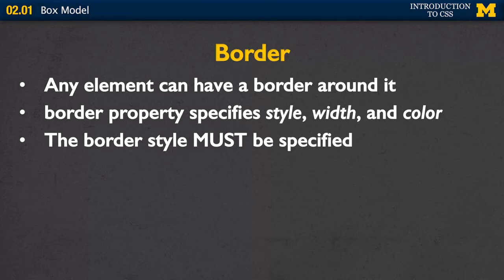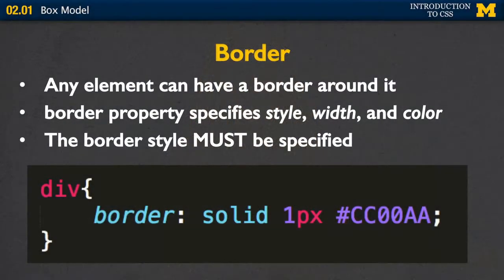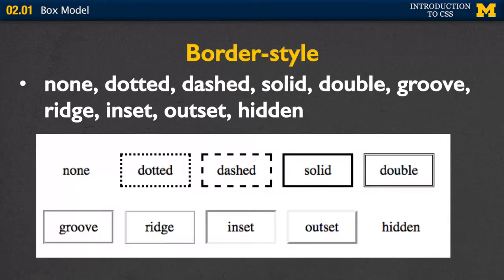The border style is the only property that must be specified. If you don't specify a color or width, it'll default to black and probably one pixel. So in this case, I've said for all my divs I want a solid one-pixel border around them. While most people always use solid, there are many different styles: dotted, dashed, grooved, ridge, hidden, inset, outset. It's really a stylistic choice — I've always just used solid myself.